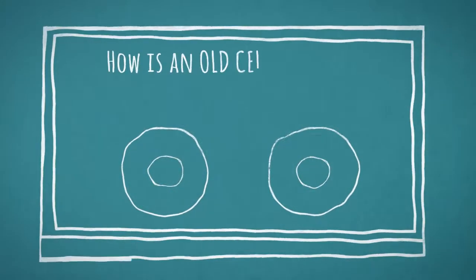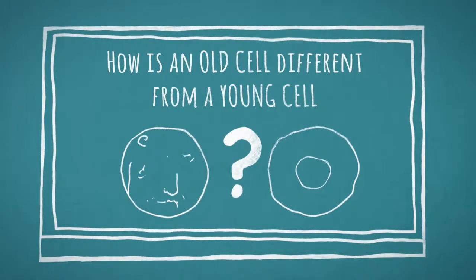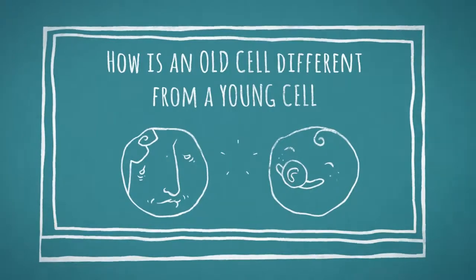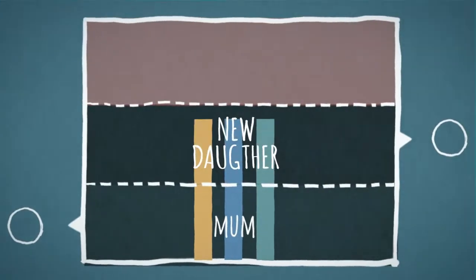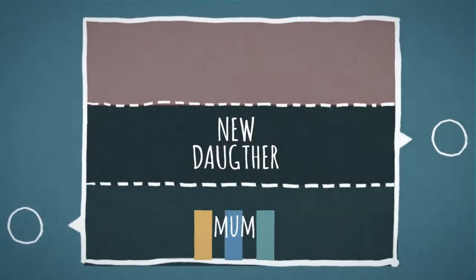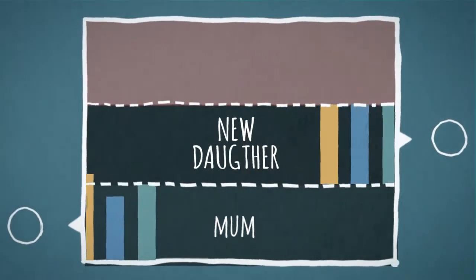So, how is an old yeast cell different from a young yeast cell? When we compare them, we see that the molecular world in an old cell is indeed different. For making a daughter's cell, it would be perfect if double the amount of everything inside the cell was made. But instead, the mother cell makes a bit too much of some parts, and too little of others.